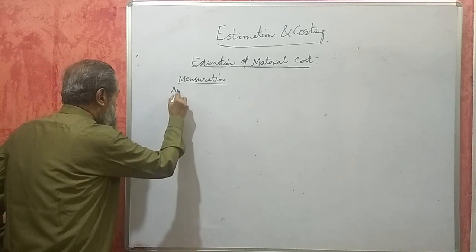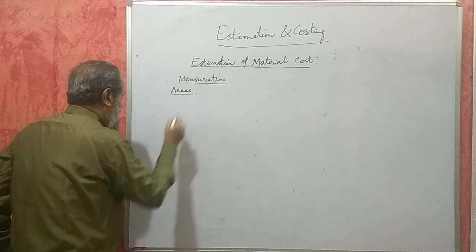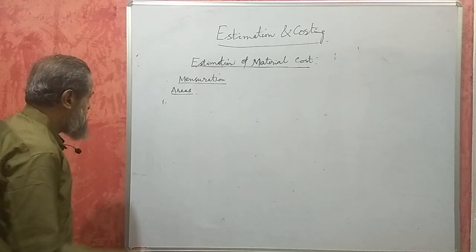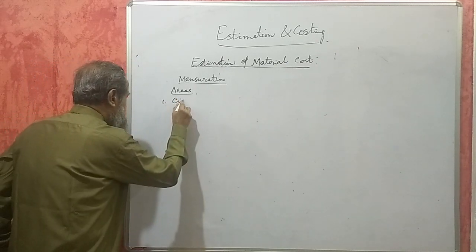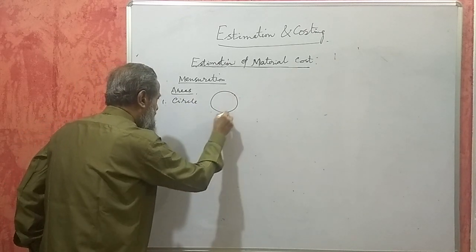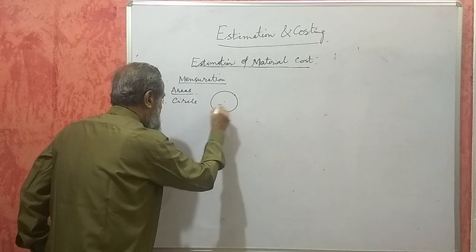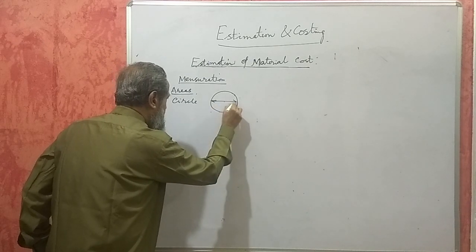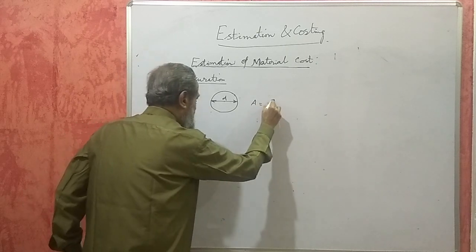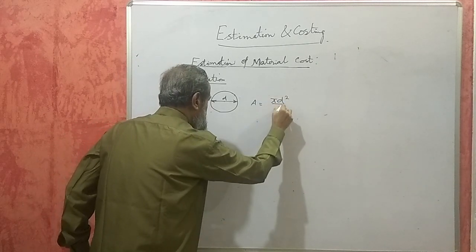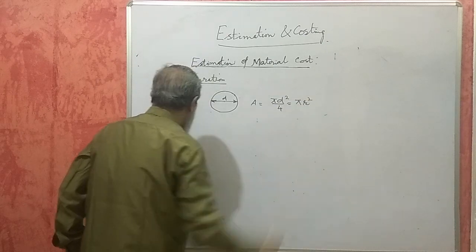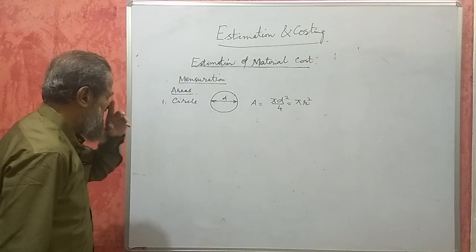Now, areas of planes — you have different types of plane figures. Like we have a circle; its radius or diameter will be given. The area will be π d² / 4, or it can also be π r², where r = d/2. This is the formula for a circle.